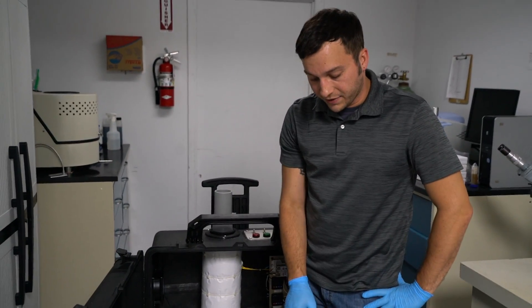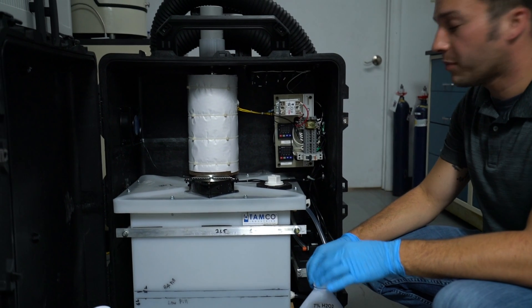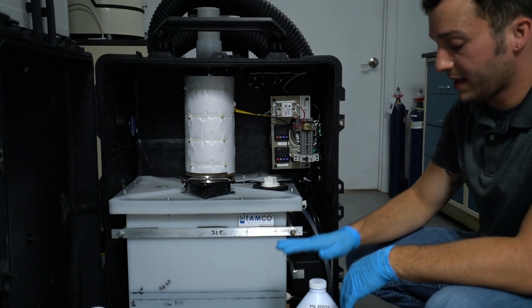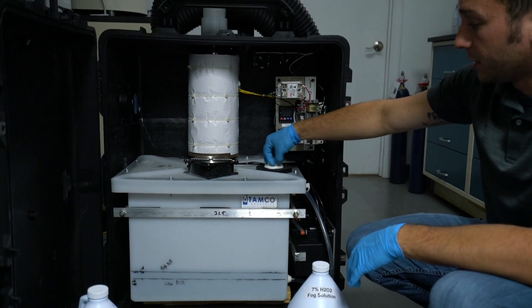For this video demonstration we are going to be using distilled water in place of the hydrogen peroxide just for safety reasons. The first step in operating the disinfection system is to add solution to the reservoir tank. To do this we will simply remove the fill plug.